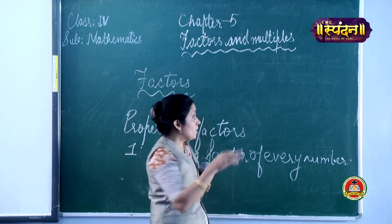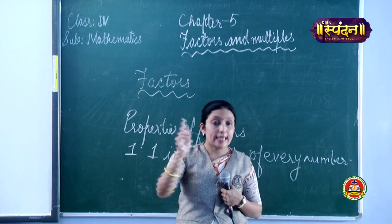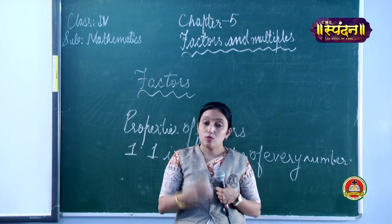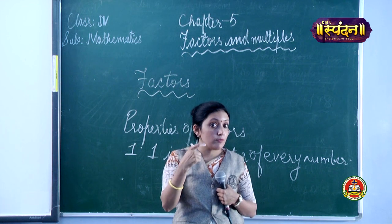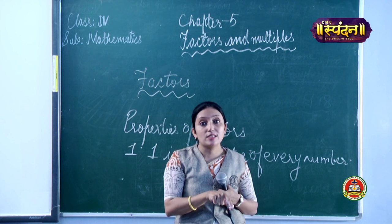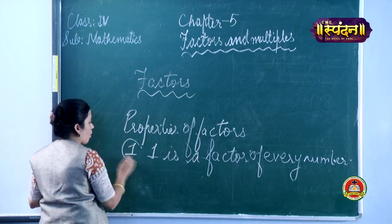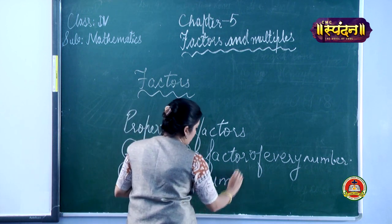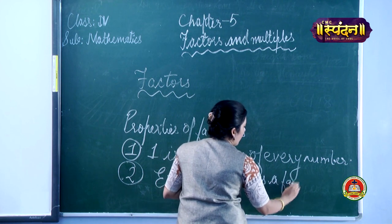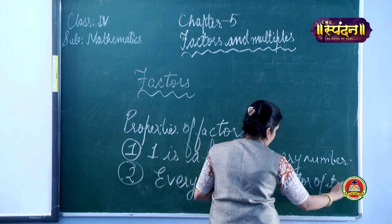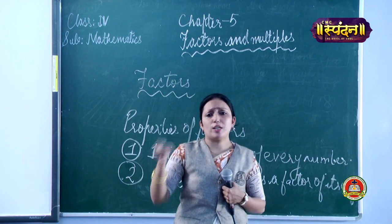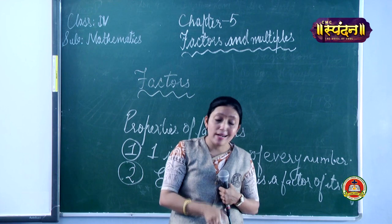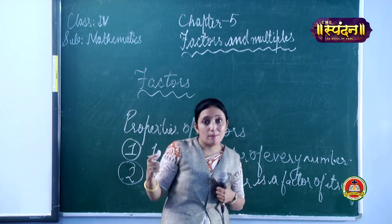Now for the second property — I just explained that 18's last factor was 18, and 4's last factor was 4. So the second property is: every number is a factor of itself. Any number you take — 5, 6, 7, 8 — one will also be a factor, and every number is a factor of itself.